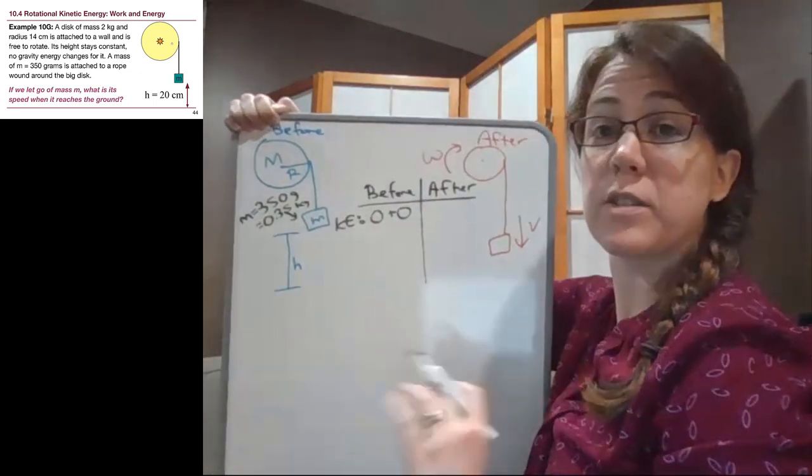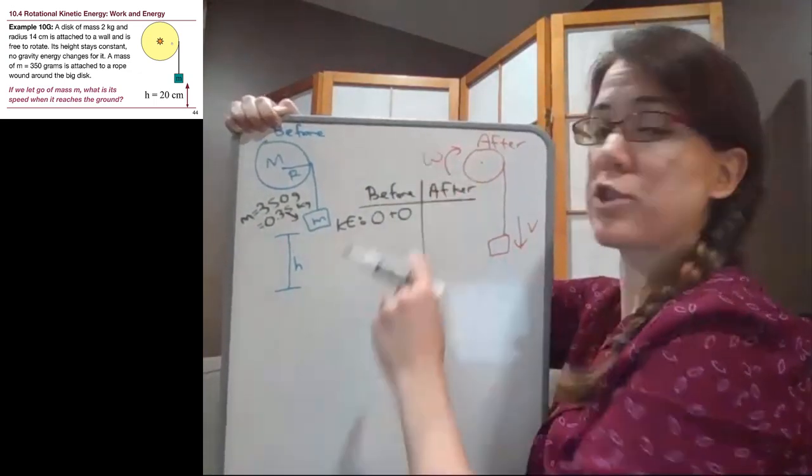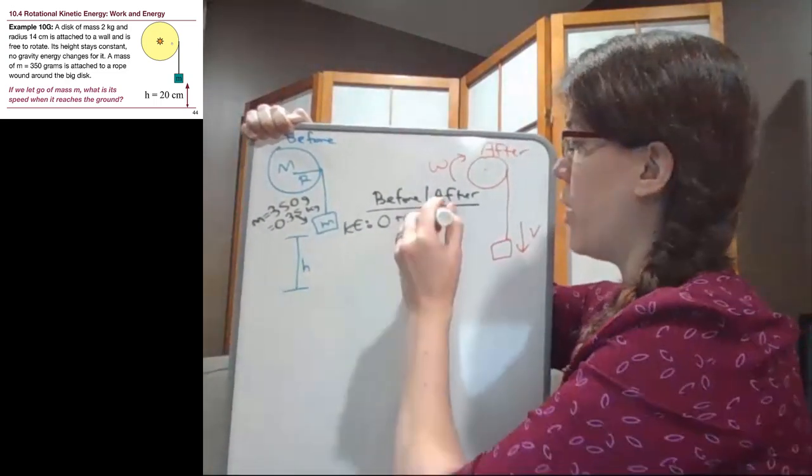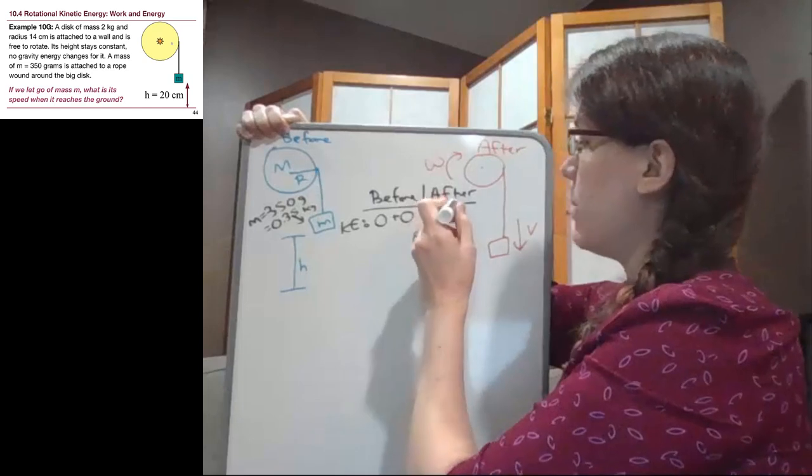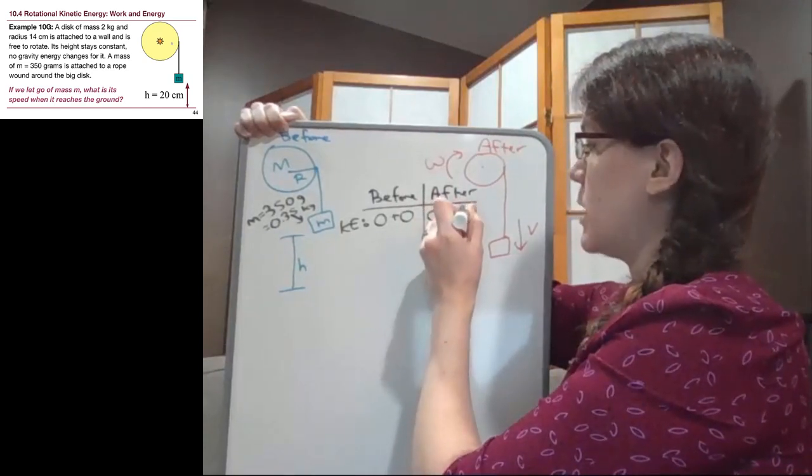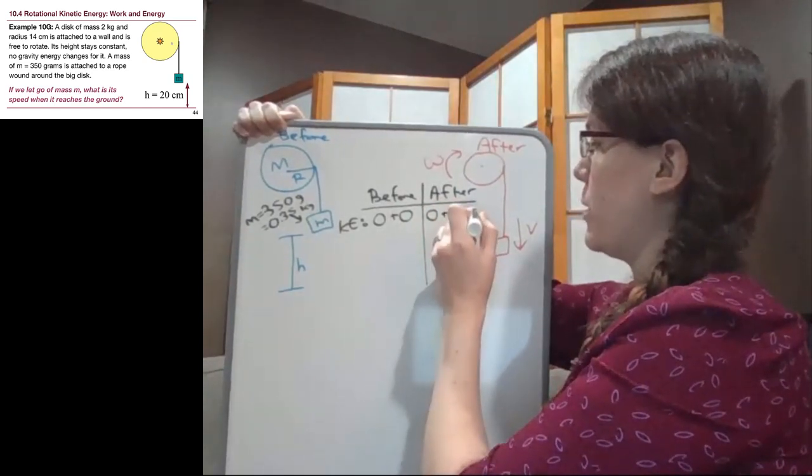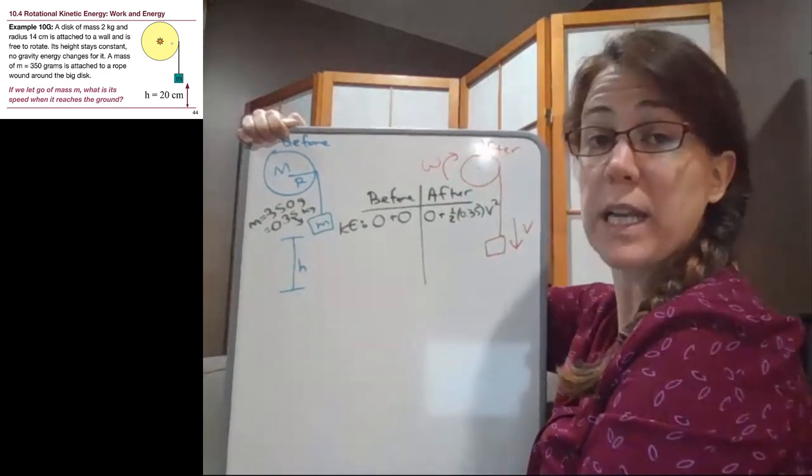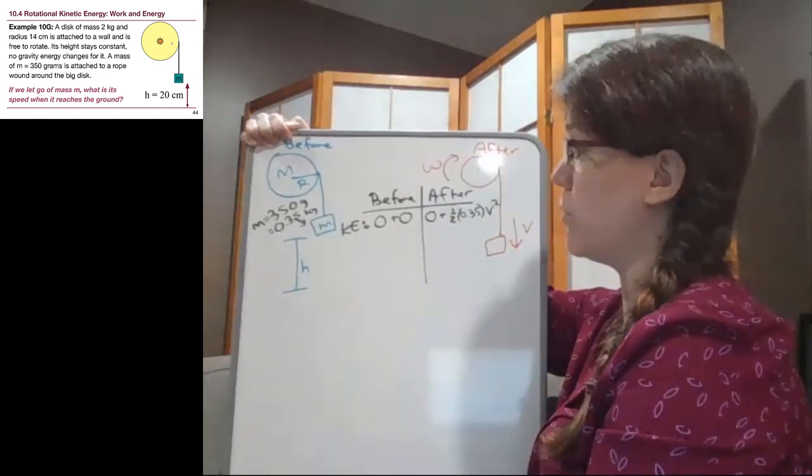The disk itself is not moving. The disk is attached to the wall, so it's not physically moving up or down or side to side overall. But the little mass, one half times that 0.35 times our unknown V - that is moving, physically moving.